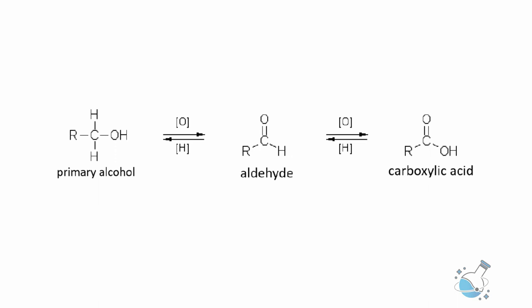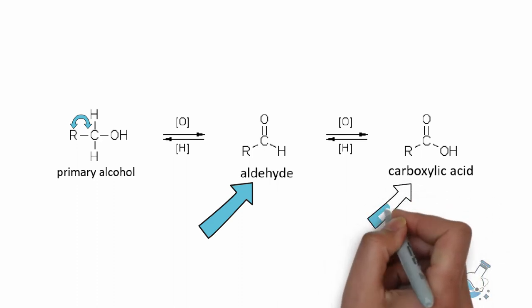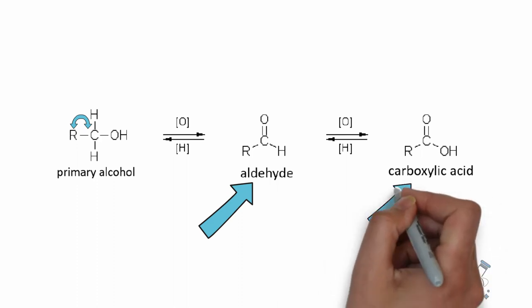Primary alcohol contains two alpha hydrogens. While being oxidized, it can lose one alpha hydrogen to form an aldehyde. When further oxidized, it loses the other alpha hydrogen to form a carboxylic acid.